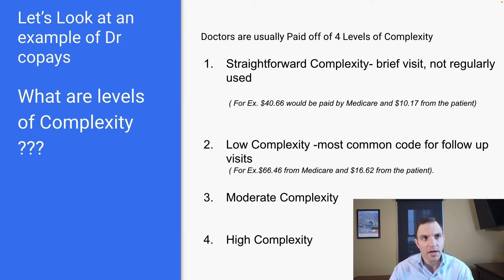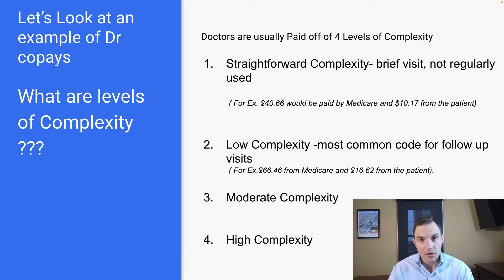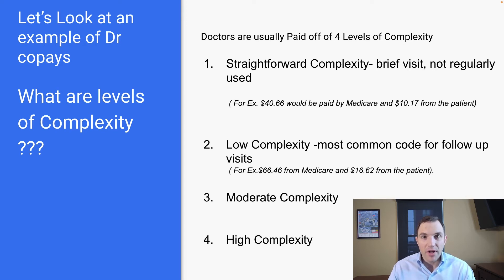This example is taken out of California — it's slightly different based on service areas across the country, but not a huge difference. For low complexity, the most common code, doctors typically get paid a total of around $83: $66 from Medicare and about $16 from the patient. Not all doctors are even going to bill this, but you're supposed to pay up to $20 — in this case it would be $16.62. The point is, it's not always $20.